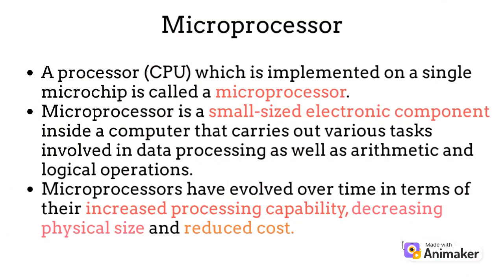A processor or CPU which is implemented on a single microchip is called a microprocessor. A microprocessor is a small sized electronic component inside a computer that carries out various tasks involved in data processing as well as arithmetic and logical operations. Microprocessors have evolved over time in terms of their increased processing capability, decreasing physical size, and reduced cost.